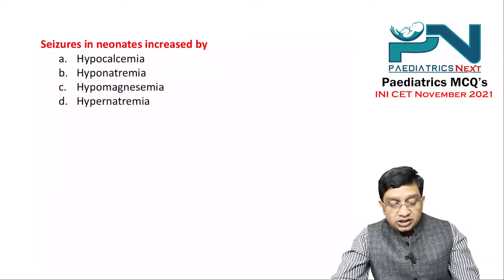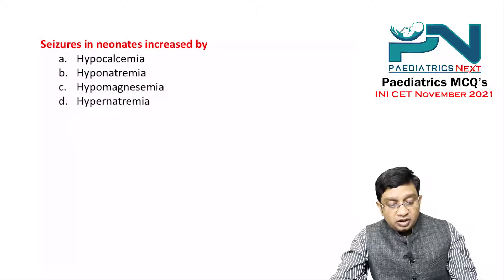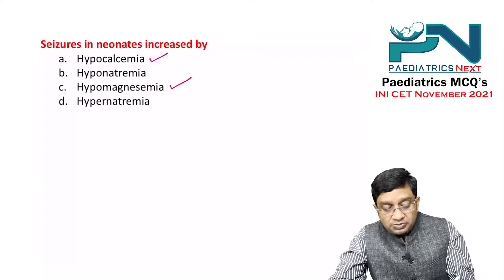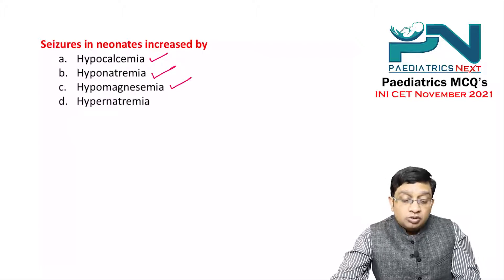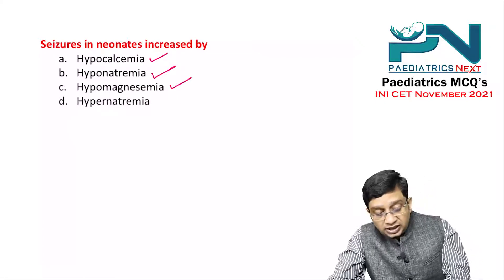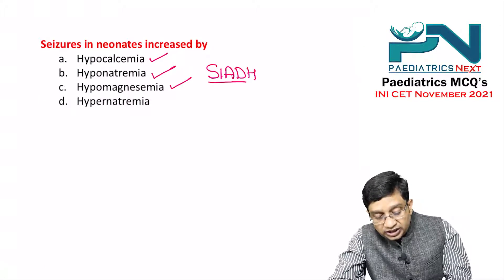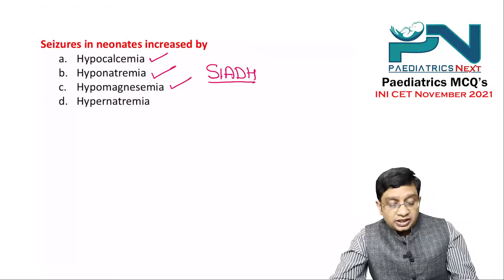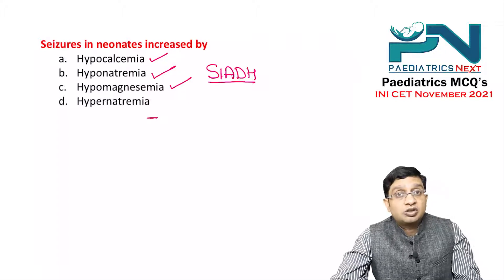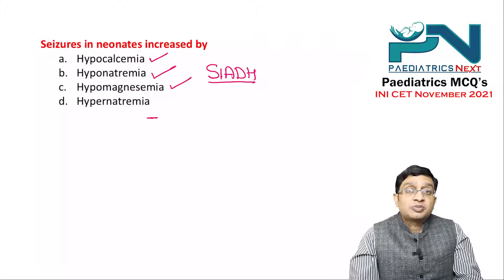The first question was: seizures in a neonate are increased by what? We know hypocalcemia is one cause, hypomagnesemia is one cause, and hyponatremia — although it is a rare cause — can still be a cause of neonatal seizure because hyponatremia can be secondary to SIADH, which can be secondary to neonatal meningitis. Students were in dilemma whether hyponatremia is a cause or not.